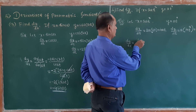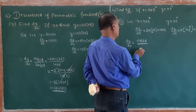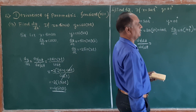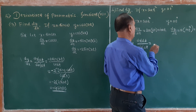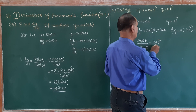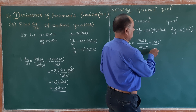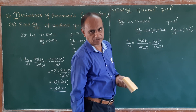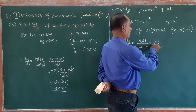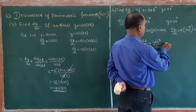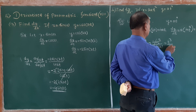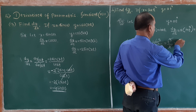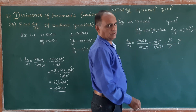Therefore, dy/dx equals dy/dt divided by dx/dt, which is 4at³ divided by 4at. The 4a cancels, and the remaining term is t raised to 3 divided by t, which gives dy/dx equal to t squared.